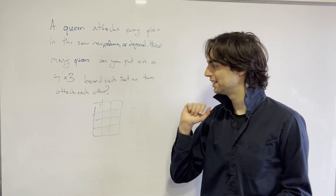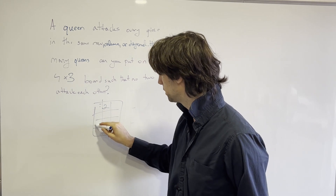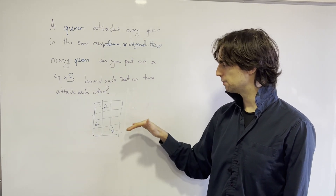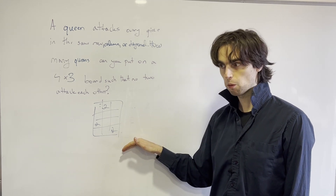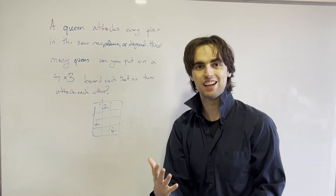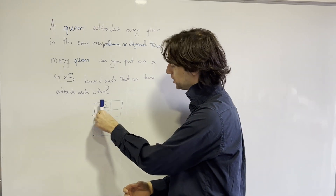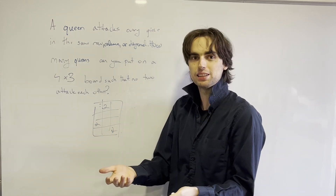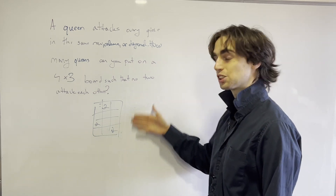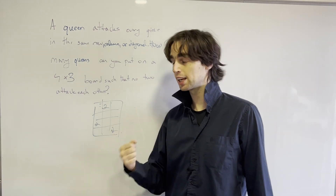Now say instead of a four-by-four board it's a four-by-three board. If you try the same argument: you can place one queen here, one queen here, one queen here — three queens. Then the row argument says every row can have at most one queen, so at most four queens. You've shown the answer is at least three and at most four, but you haven't shown it's three. You need to change your argument: every column can have at most one queen, there are three columns, so at most three queens. Both arguments are correct, but the row argument doesn't give you the answer because of the columns.